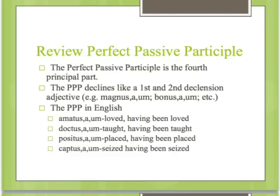Now to review: we've learned the perfect passive participle before, and it has been showing up on your synopsis quiz. The perfect passive participle is the fourth principal part, and it declines just like first and second declension adjectives — like magnus, -a, -um or bonus, -a, -um. We translate the perfect passive participle as a past passive or 'having been': amatus means loved or having been loved; doctus means taught or having been taught; positus means placed or having been placed; captus means seized or having been seized.